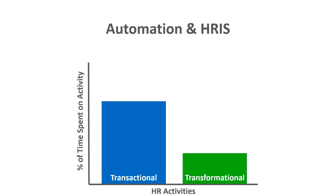Earlier I referenced transactional and transformational activities and the shift from transactional to transformational within HR. On this graph, the y-axis shows the percent of time spent on a particular type of activity and the x-axis shows the two activity types. Transactional activities are those administrative in nature — necessary but not really adding additional value, though failing to do them causes problems. For example, payroll is a transactional activity: not doing it on time will frustrate employees or cause them to leave.